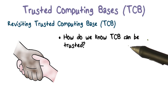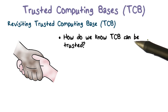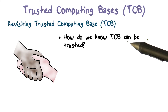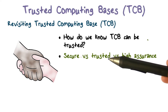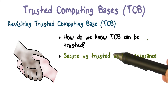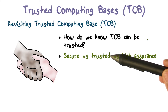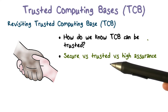The first question we have to ask ourselves is: how do we know that a certain system that claims to be a TCB, or trusted computing base, can actually be trusted? Trusted is not the only qualifier we use. We call systems secure systems, trusted — I've been using this word — but also high assurance systems.